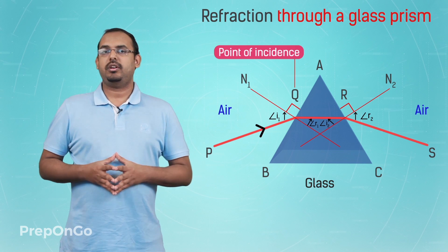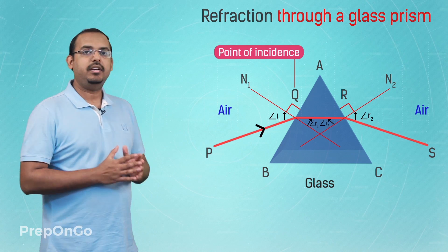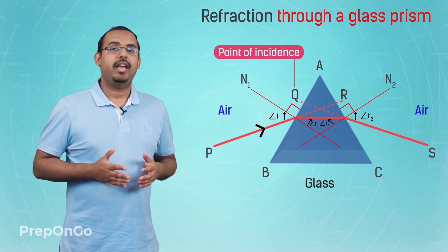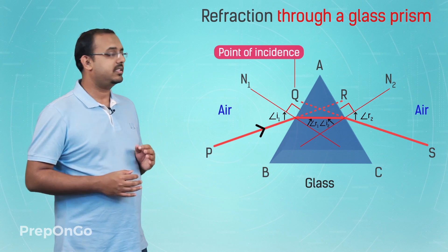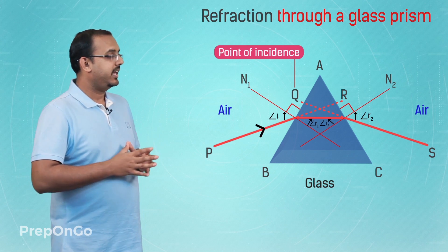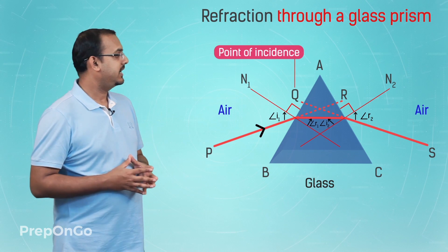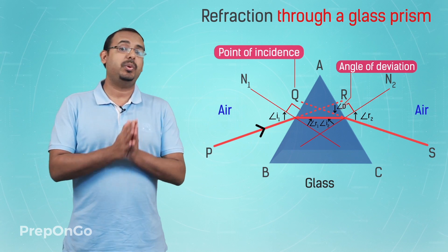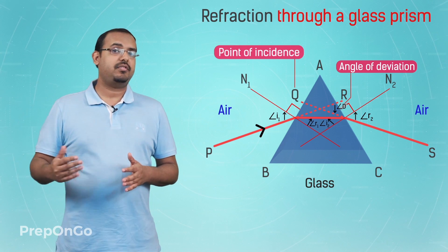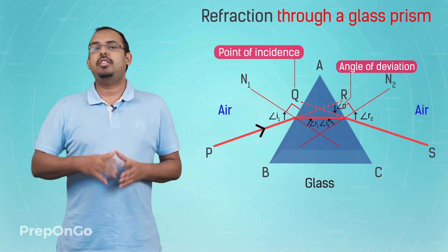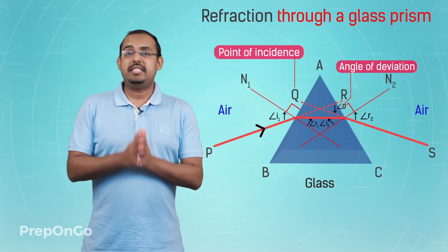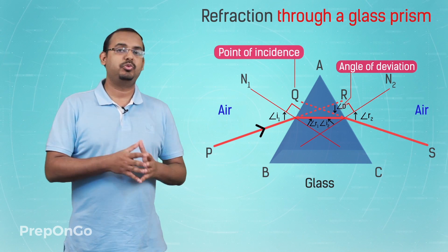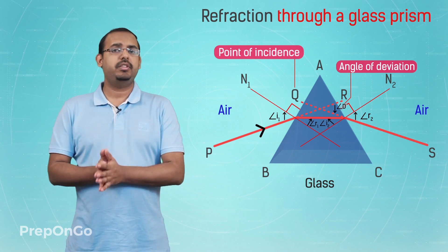One more important concept we should know is that if we extend the direction of the original incident ray PQ and extend the direction of the final refracted ray RS, we can see that both these rays would have met at a point inside the glass prism. Both these extended rays make an angle shown here as angle D with each other. This angle between the direction of the original incident ray and the direction of the final refracted ray is called the angle of deviation of the prism.